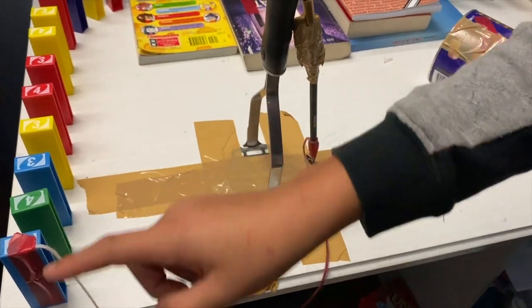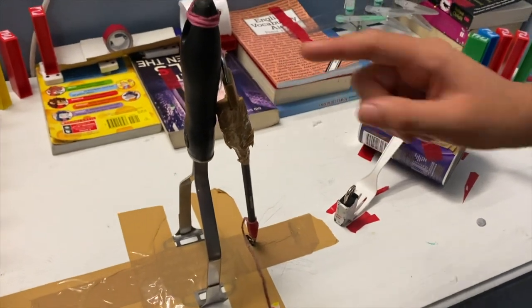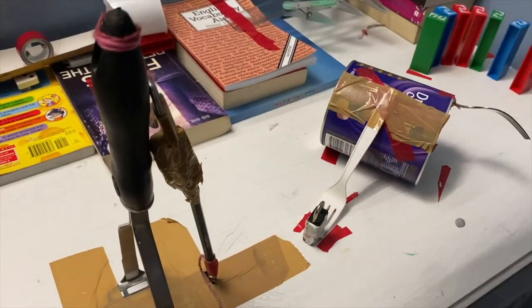Then when it gets to the last one, this domino will fall over, causing this one to fall as well, triggering this lock to spin around.